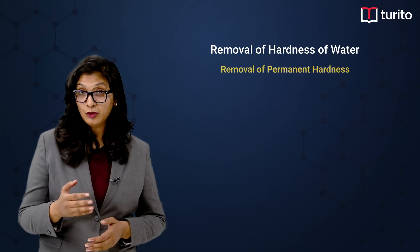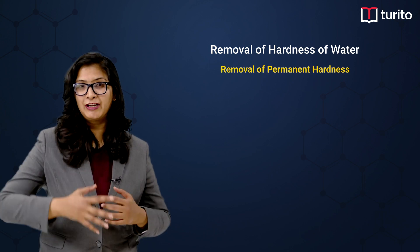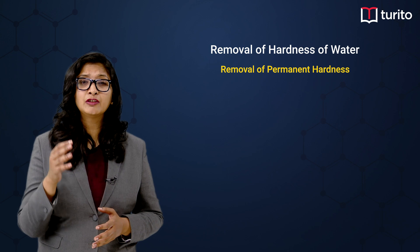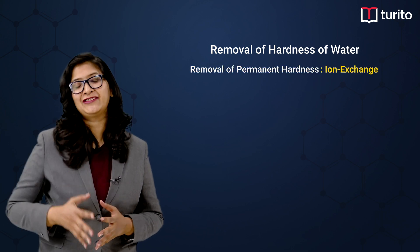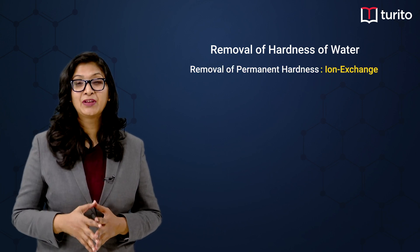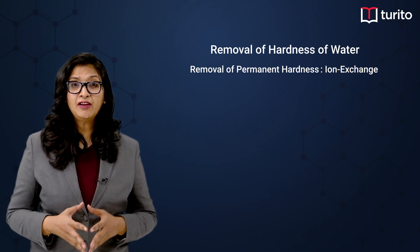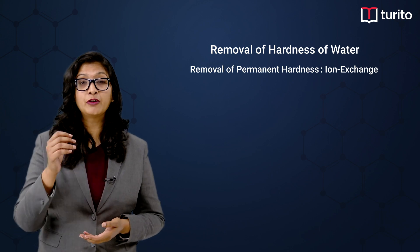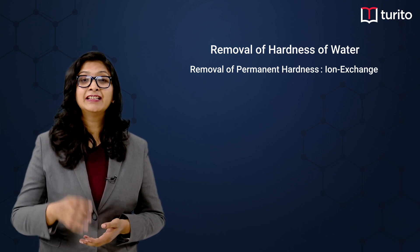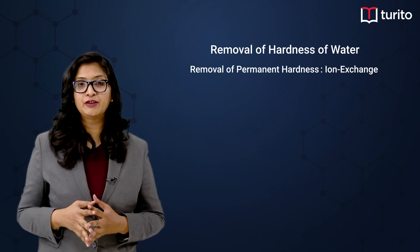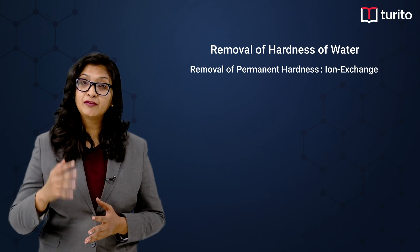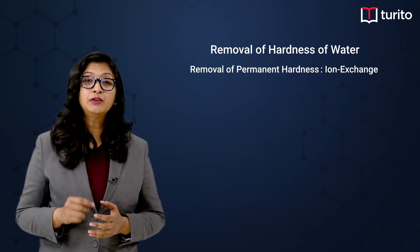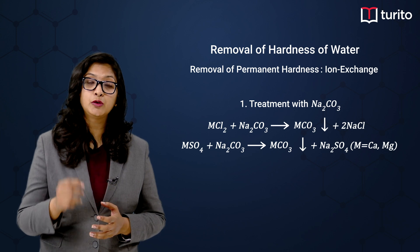Now let us talk about the removal of permanent hardness. Remember that permanent hardness is always removed by ion exchange method. There are four different methods, and in all of them there will be ion exchange. The first one is treatment with Na2CO3.